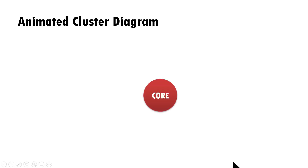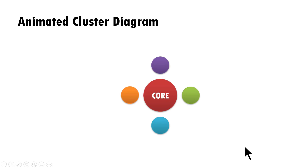Let us go to Slideshow mode and see how that works. We have the core shown, and on a click, the four circles appear and come out. So we have got our first layer animated. The second layer follows exactly the same logic.